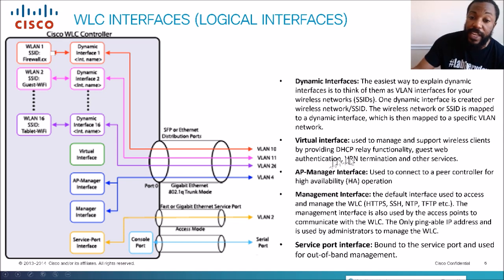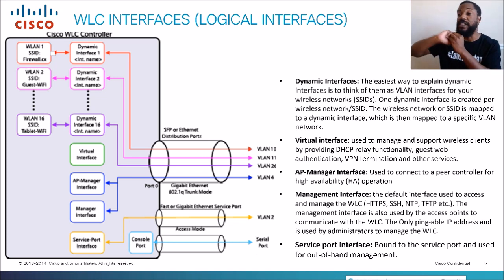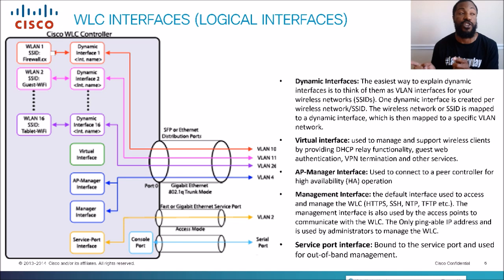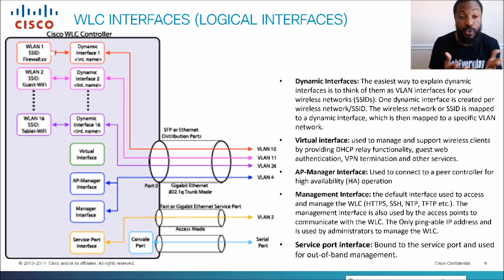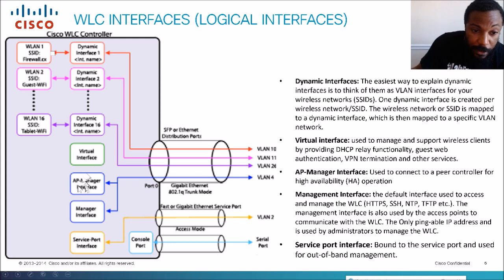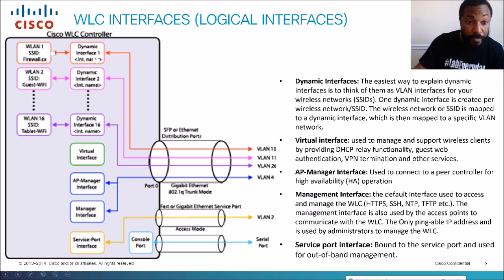The virtual interface on a wireless controller is used to manage or support wireless clients by providing DHCP relay functionality, guest web authentication, VPN termination, and other services. DHCP is a service that assigns IP addresses automatically to clients on a network. The virtual interface handles relay functionality — if we have a DHCP server on another network, the relay acts as a middleman, taking DHCP requests and handing them off to the DHCP server.